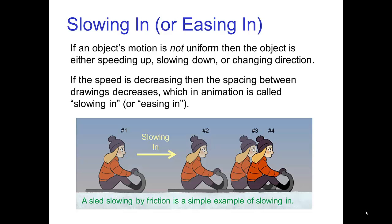If an object's motion is not uniform, then the object is either speeding up, slowing down, or changing direction. If the speed is decreasing, then the spacings between drawings decreases, which in animation is called slowing in or easing in. A sled slowed by friction is an example of slowing in.